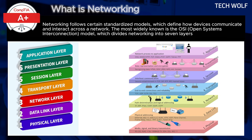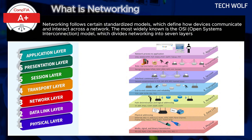Now let's talk about networking models. Networking follows certain standardized models which define how devices communicate and interact across a network. The most widely known is the OSI, or Open Systems Interconnection model, which divides the network into seven layers: Physical layer, Data Link layer, Network layer, Transport layer, Session layer, Presentation layer, and Application layer.